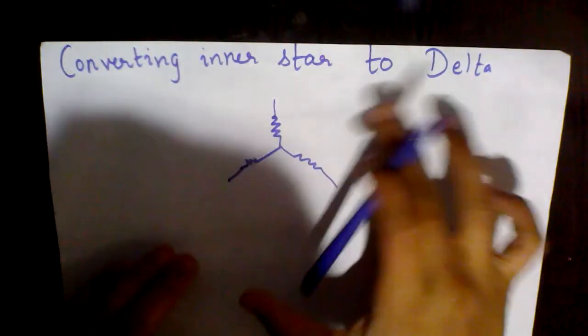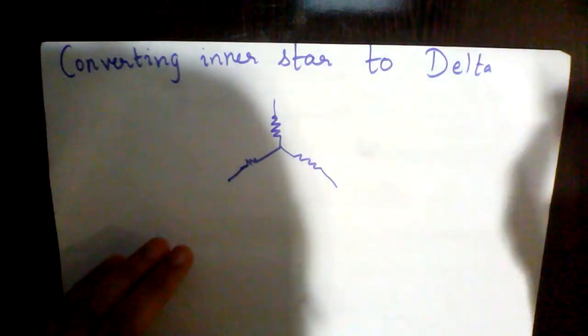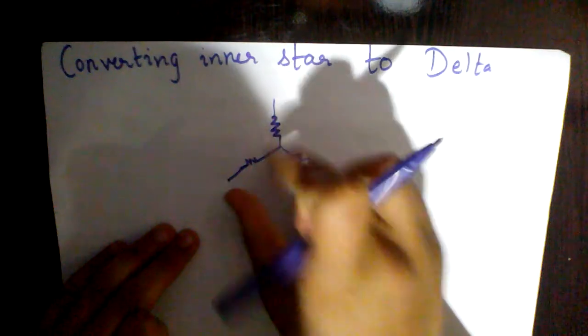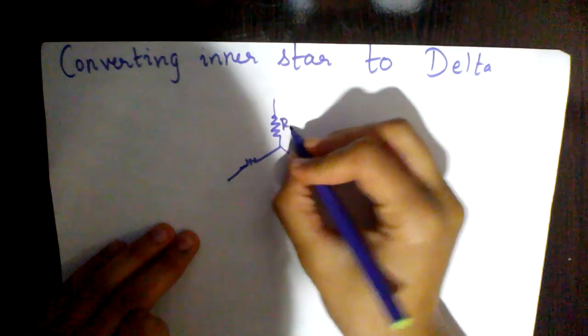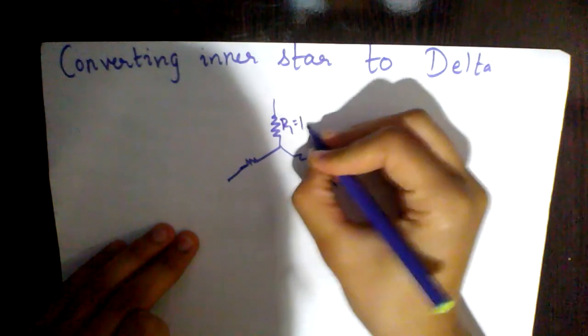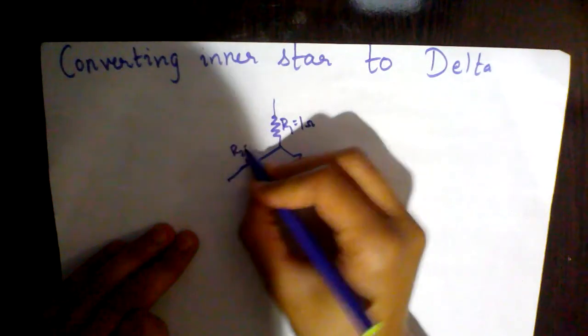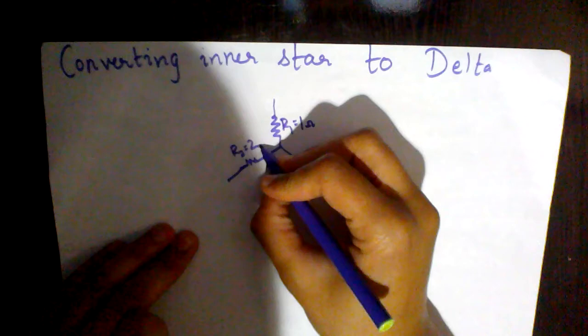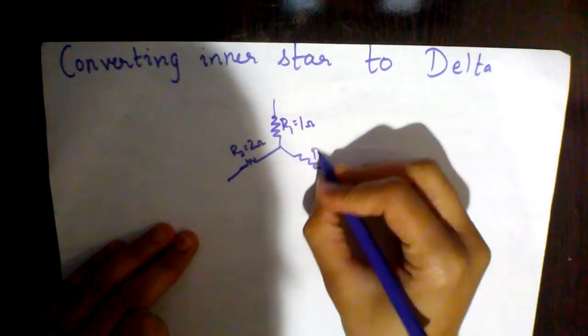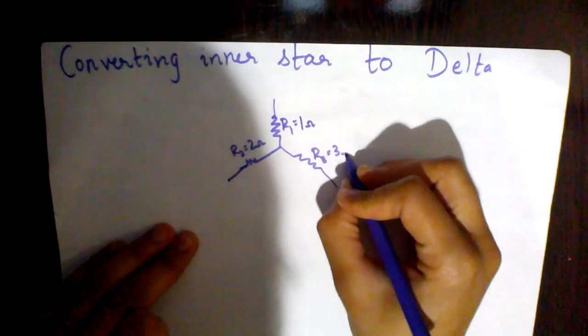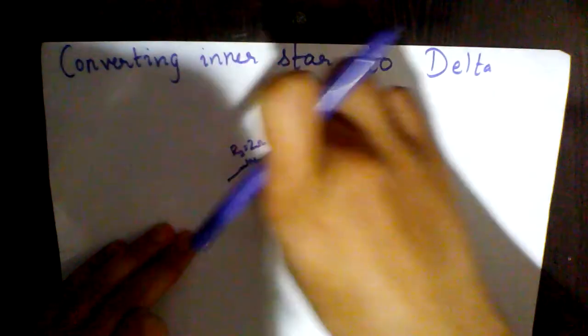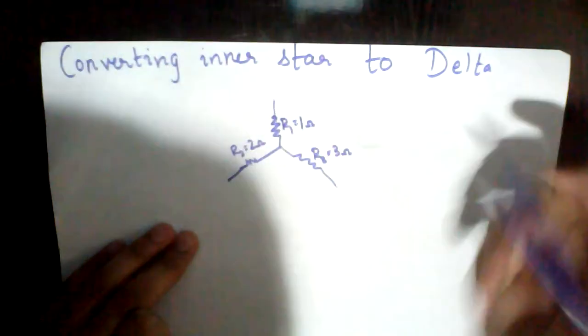Converting the inner star into delta. Imagine you have three resistances: R1 equals 1 ohm, R2 equals 2 ohms, R3 equals 3 ohms. Now we have to convert this star into a delta network.